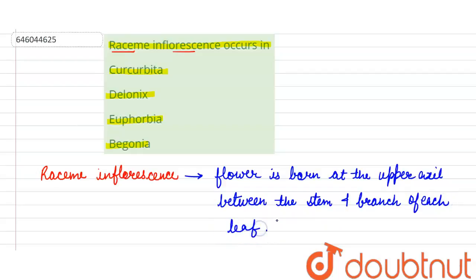Each flower is born on a short stalk which is known as pedicel. So in a raceme inflorescence, the flowers are pedicillate.